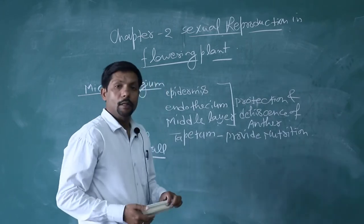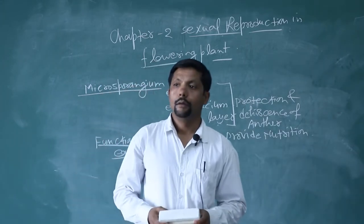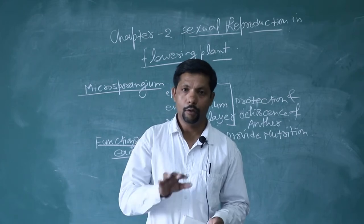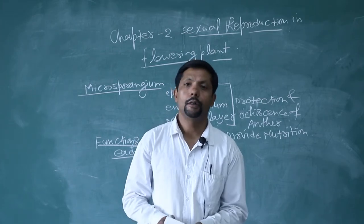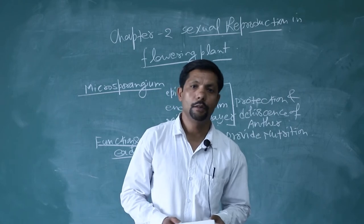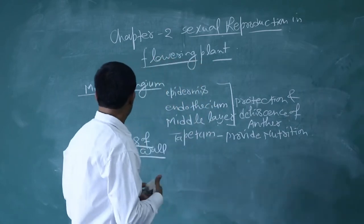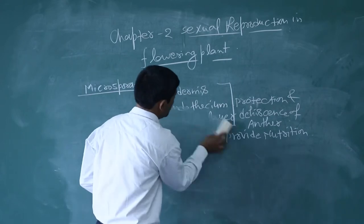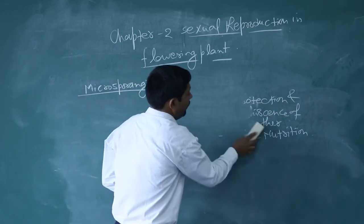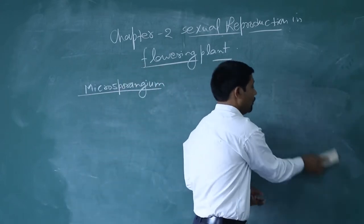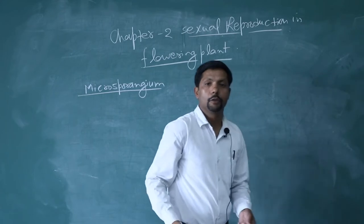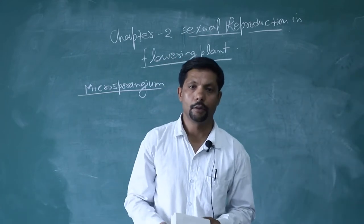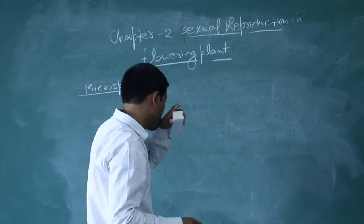The tapetum cells are generally binucleated. One question from your NCERT: how is this binucleate condition created? The answer is — when karyokinesis is not followed by cytokinesis, the cell becomes binucleate. This is the answer to your NCERT question.